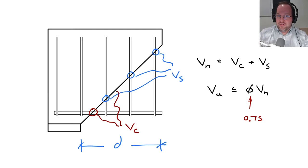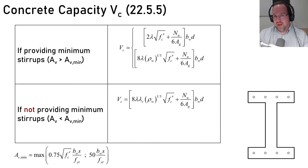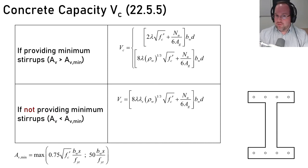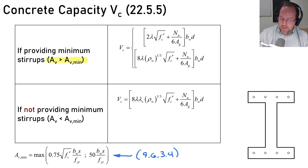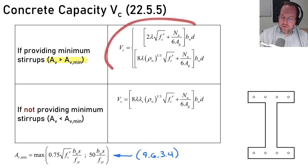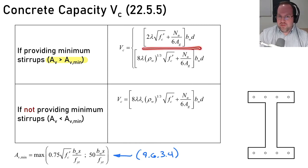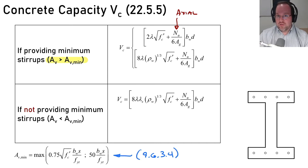Now let's dive into the code, starting with concrete capacity — this is where the major change happened between ACI 318-14 and 318-19. Three equations represent all of our reinforced concrete beam capacity; the detailed method is gone. A key distinction is that I have different concrete capacity depending on whether or not I provide minimum shear reinforcement. If A_V, my shear reinforcement area, is greater than the minimum defined in section 9.6.3.4, I get to use one of two equations. The first equation is very similar to the simplified equation from the previous version but with the axial term now automatically included. N_u is your factored axial force demand — positive in compression, negative in tension.